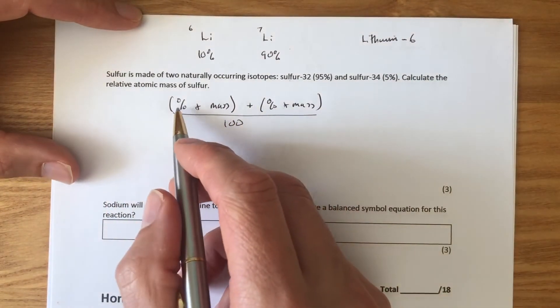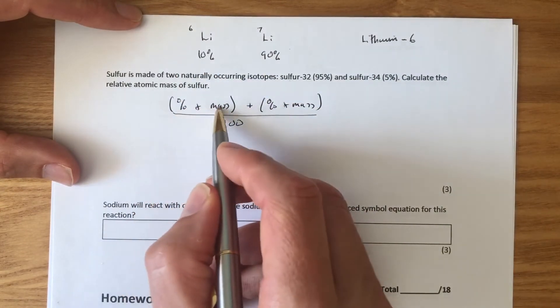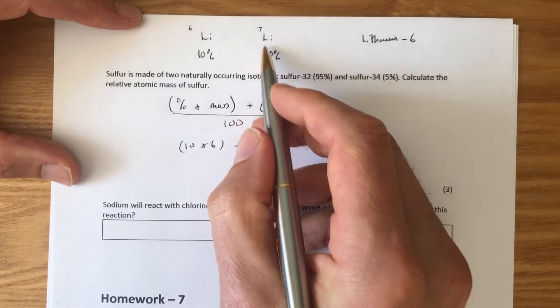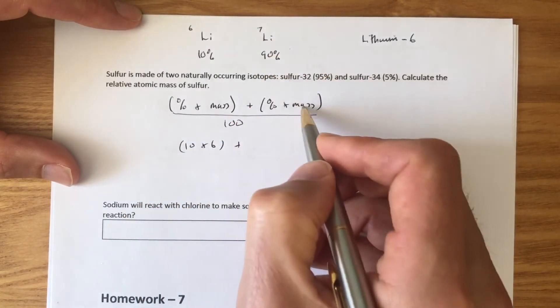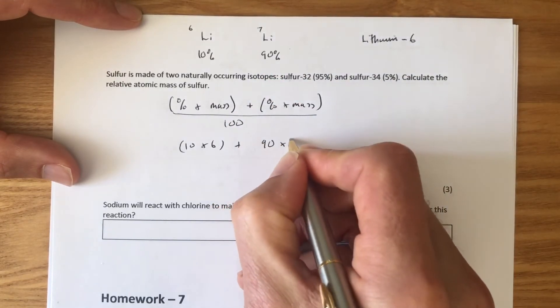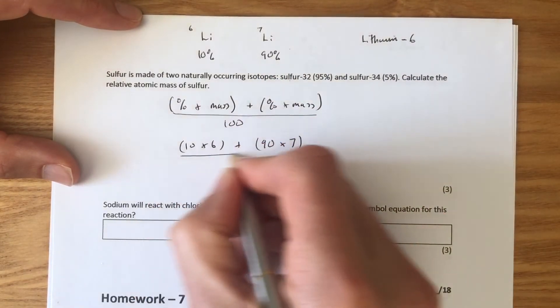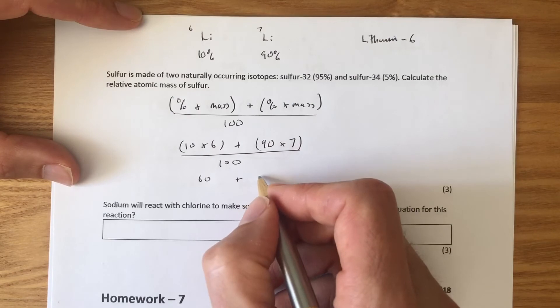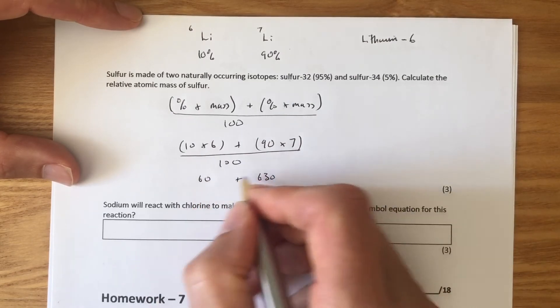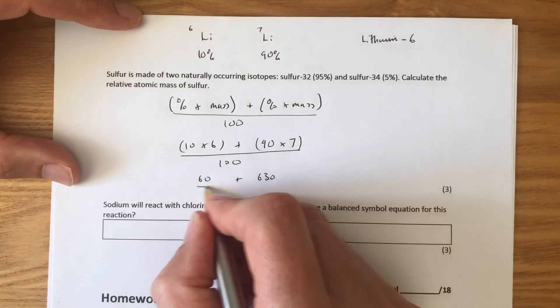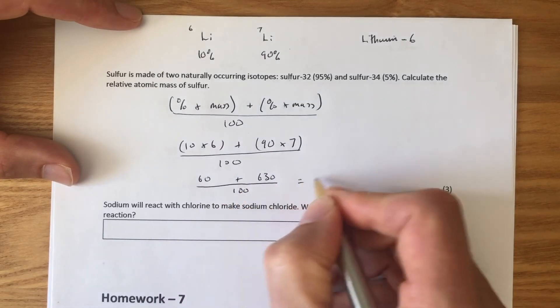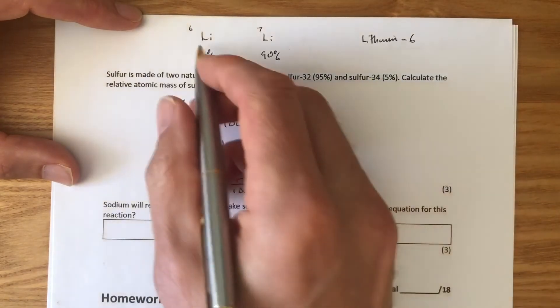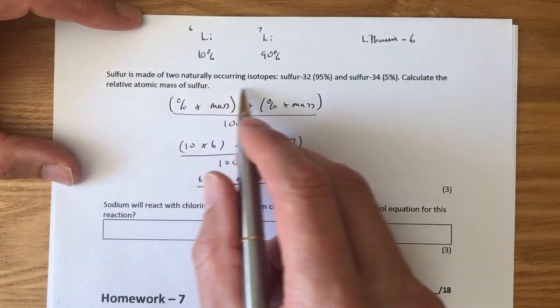Now, all that's left to do is plug the numbers in. So, 10% lithium-6. 10% times 6. 10 times 6. Plus 90% times 7. 90 times 7. The brackets mean we have to work that out first. So, 10 times 6 is 60. Plus 90 times 7. Well, 9×7 is 63. So, that's 630. 630 and 60. 690. So, it's 690 divided by 100 is 6.9. That is not the answer to this question. That's the answer to a different question. You need to do the answer to this question.